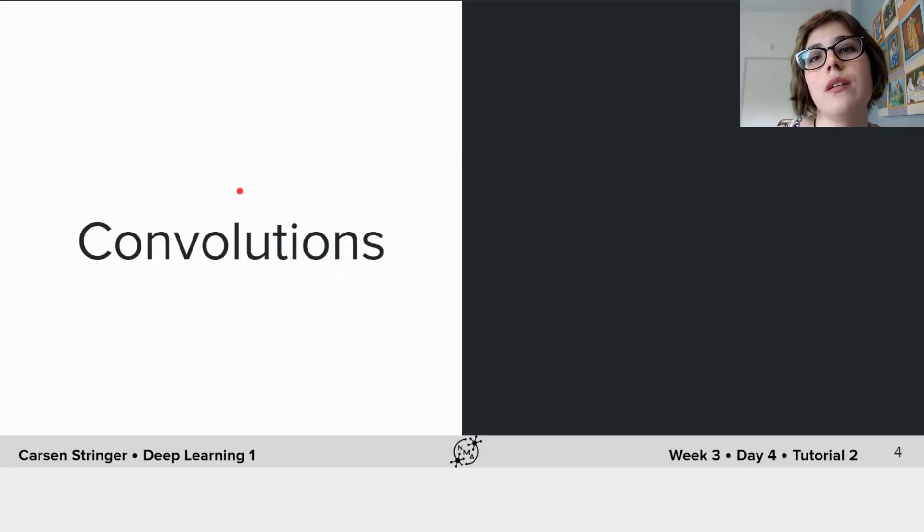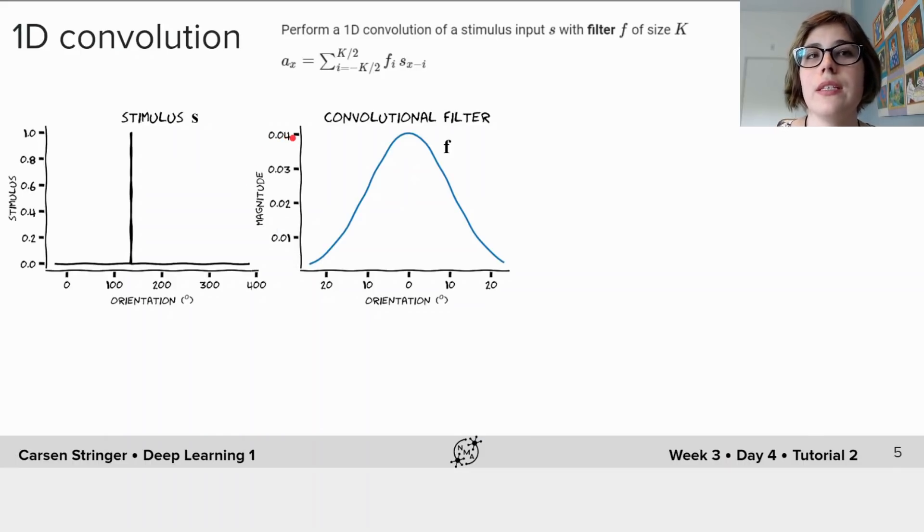So first, what is a convolution? A convolution is the integral of a product of two functions, one of which is our filter f, which we can show here. We're using an example of a Gaussian filter and our stimulus s.